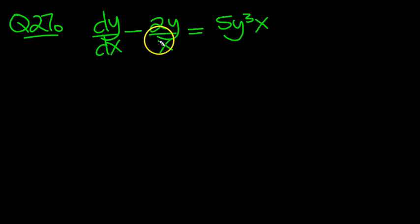dy/dx minus 2y over x equals 5y cubed x. So here it's all arranged in the correct order, so v is equal to y to the 1 minus n.